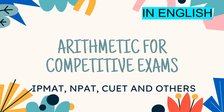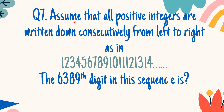Competitive exams, arithmetic series. Another question. The question says: assume that all the positive integers are written down consecutively from left to right. Like we are writing 1, 2, 3, 4, 5, 6, 7, 8, 9, 10, 11, 12, 13 and so on. We are writing all the positive integers. The question is: what is the 6,389th digit in this sequence? You have to find out what will be the 6,389th digit in this sequence.